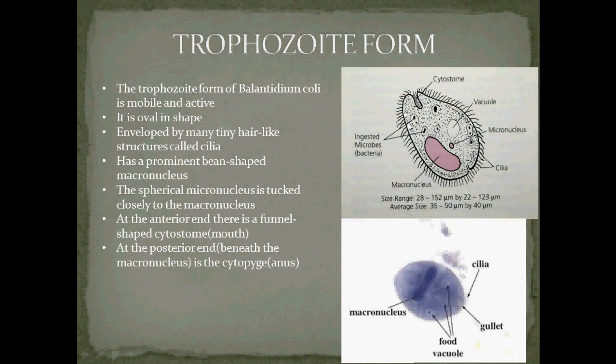The trophozoite form of Balantidium coli is mobile and active. It is oval in shape, and circumvulating them are many tiny hair-like structures called cilia, and they have a prominent bean-shaped macronucleus.